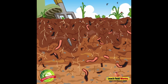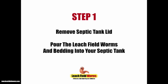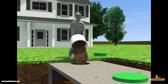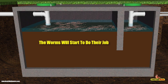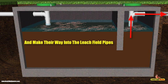For thousands of years, worms have been living underground eating rotten and decaying waste and converting it into clean organic matter. Step one: once you've received your bucket of worms, simply remove the lid off the septic tank, remove the lid off the bucket of worms, and pour the worms and bedding into your septic tank. The worms will settle on top of the sludge and very quickly start to do their job — breeding, multiplying, and burrowing into the sludge, making their way through the pipes toward the drain field.